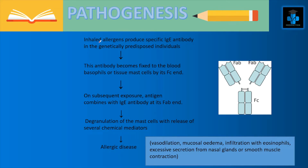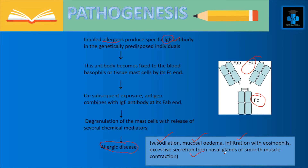Regarding pathogenesis, inhaled allergens produce specific IgE antibodies in genetically predisposed individuals. This antibody becomes fixed to blood basophils or tissue mast cells by its Fc end. On subsequent exposure, the antigen combines with IgE antibody at its Fab end, resulting in degranulation of the mast cells with release of several chemical mediators. These chemical mediators act by creating vasodilation, mucosal edema, infiltration with eosinophils, excessive secretion from nasal glands, or smooth muscle contraction.